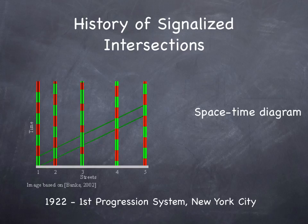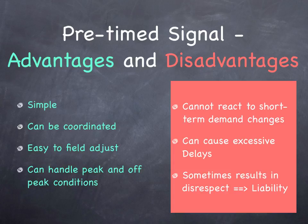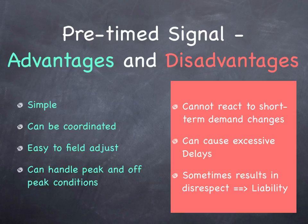With a fully actuated signal, it's harder to maintain a green wave. Pre-timing helps a lot with coordination because it's very hard to coordinate signals with different cycle lengths at different intersections. It can be adjusted in the field pretty easily — you can send a tech out to adjust some dials and change the plan, and you can set it for on-peak and off-peak. However, you can't respond to short-term changes in traffic levels. It can cause needless delays, and if it results in disrespect because it's set very poorly, that can create liability issues.